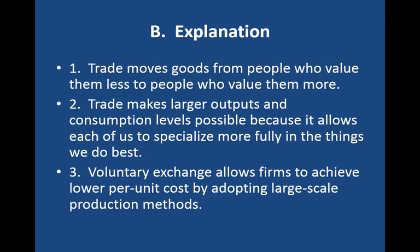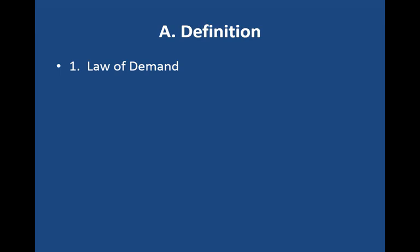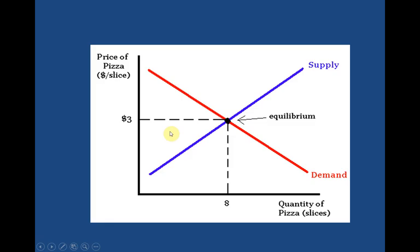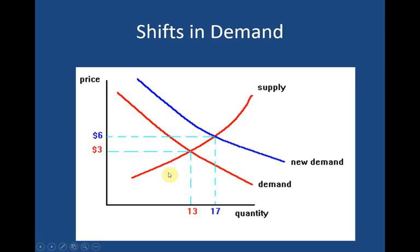I'm going to skip past the sections on trade promoting progress and transaction costs. Looking at the law of supply and demand chart: the key idea is that when the price for a product reaches a level where the producer makes a profit and is happy, and the consumer feels the product is worth the price they're paying and is happy, then the price has reached equilibrium. This is central to basic economics.